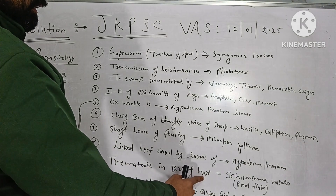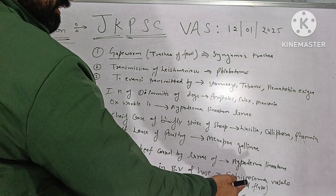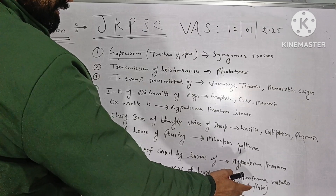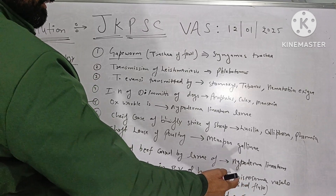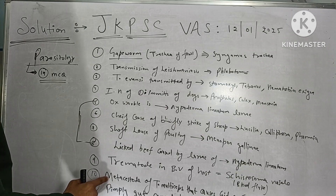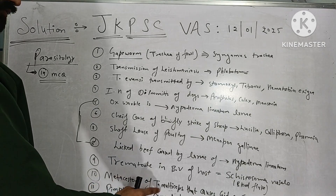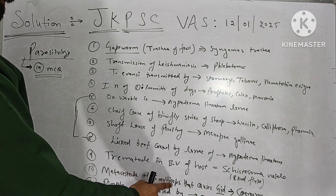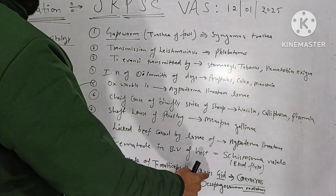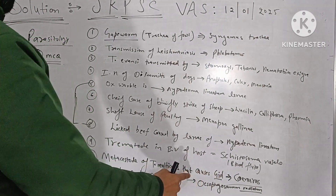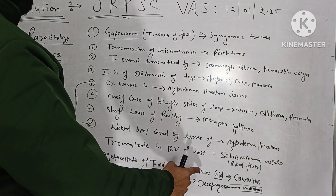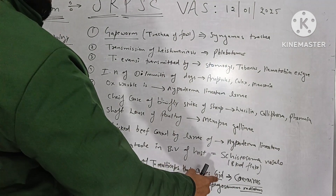Then a trematode which resides in the blood vessels of the host — Schistosoma — as we know they are known as blood flukes, and the option given was Schistosoma. The metacestode of Taenia multiceps which causes gid or staggers is known as Coenurus cerebralis, which is related with the brain.